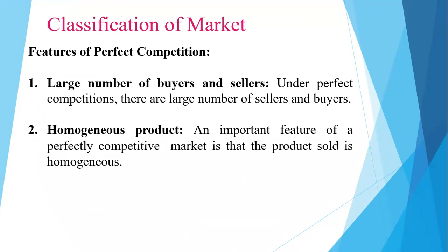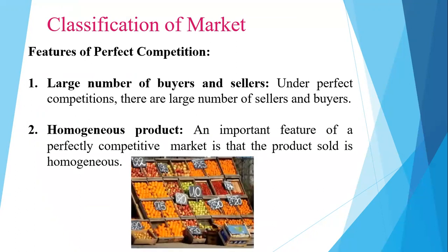The second feature is homogeneous product. An important feature of a perfectly competitive market is that the product sold is homogeneous, meaning it is identical in all respects such as shape, size, color, taste, design, quality, etc. The products are perfectly substitutable for each other and therefore no buyer is attached to a particular seller. Hence, the price of the product is also uniform and no seller will charge a higher price for the same commodity. All firms belonging to the industry must be selling identical products, and hence a uniform price must rule throughout the market for that product.